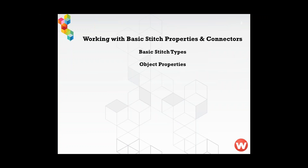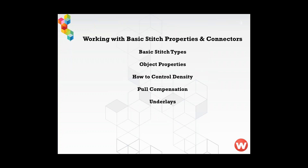We are also going to go through the object properties of the various stitch types. We are going to talk about how to control the density, pull compensation — what it is, how we turn it on, and what it helps with. We will speak about underlays. We are going to talk about connectors. Connectors in the Wilcom software is what generates our trims between our embroidered objects or within our lettering objects.